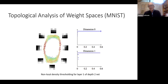You might ask: is the mapper picture meaningful, or just tuned to get what you wanted? The persistent homology barcodes are on the right, where you can see the space is connected and there's a pretty strong signal for a circle. That's further confirmation that this picture is the right one.